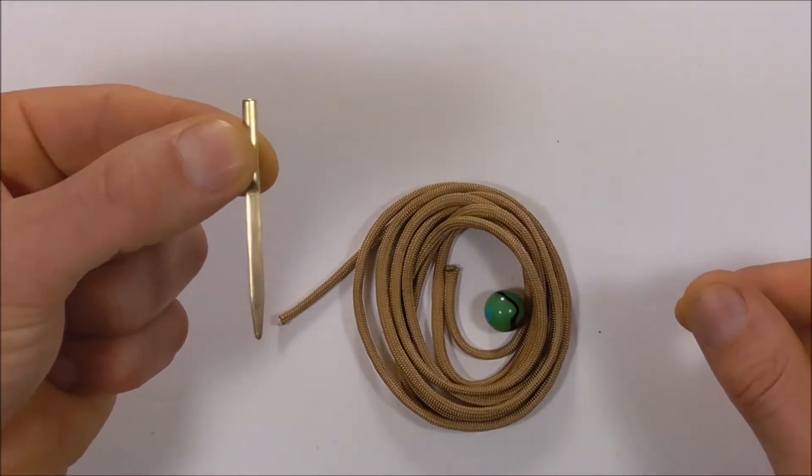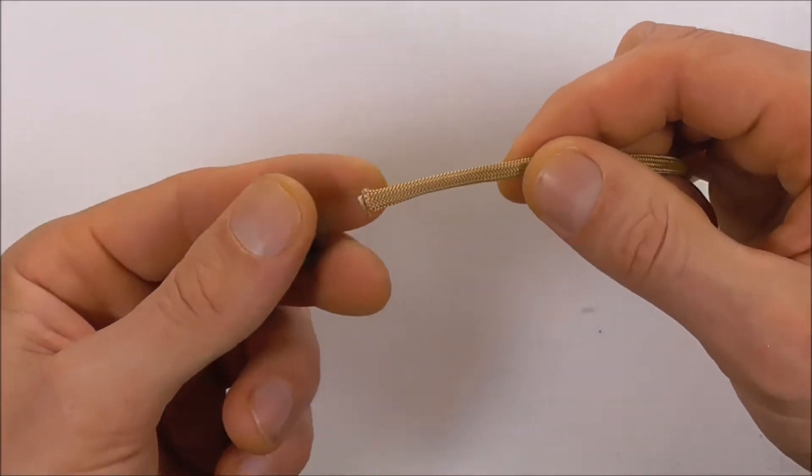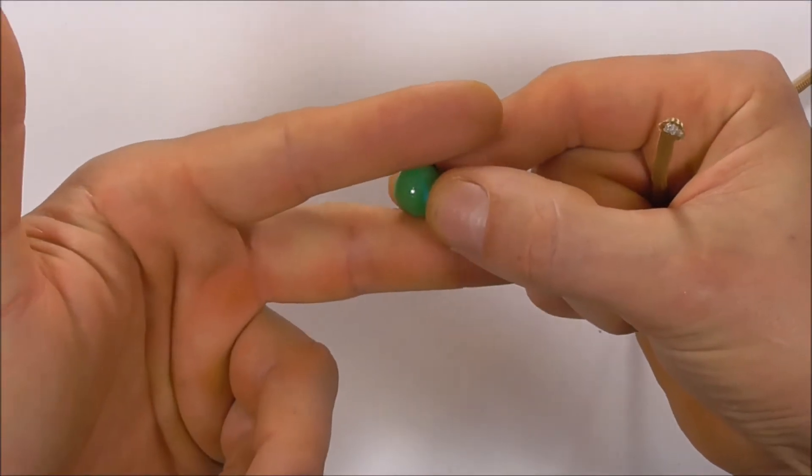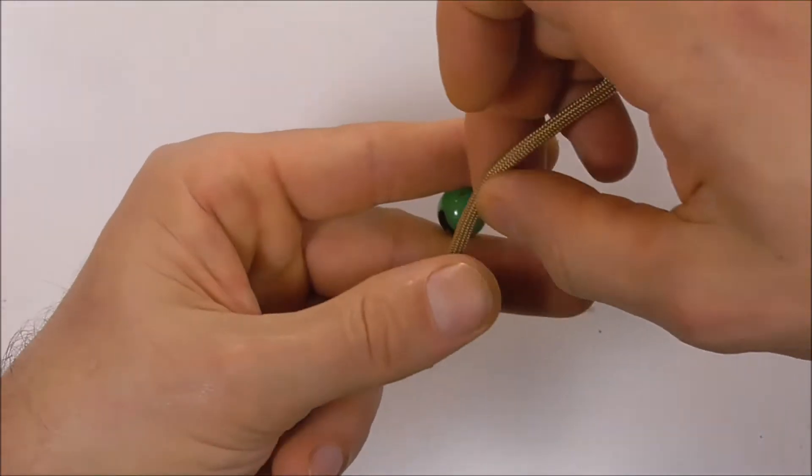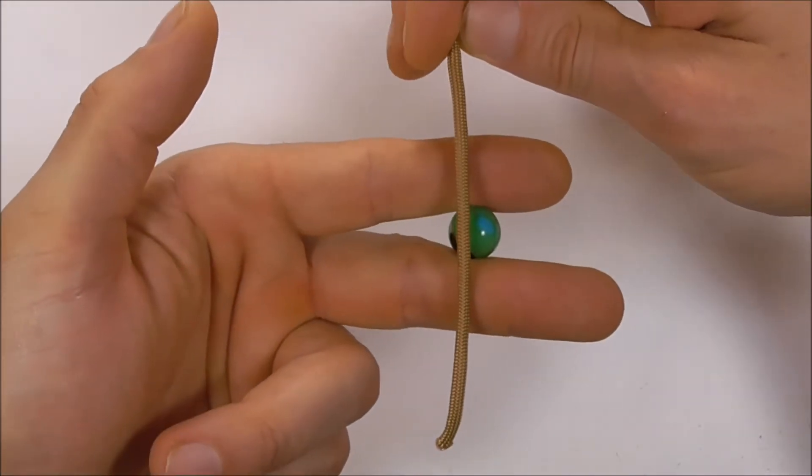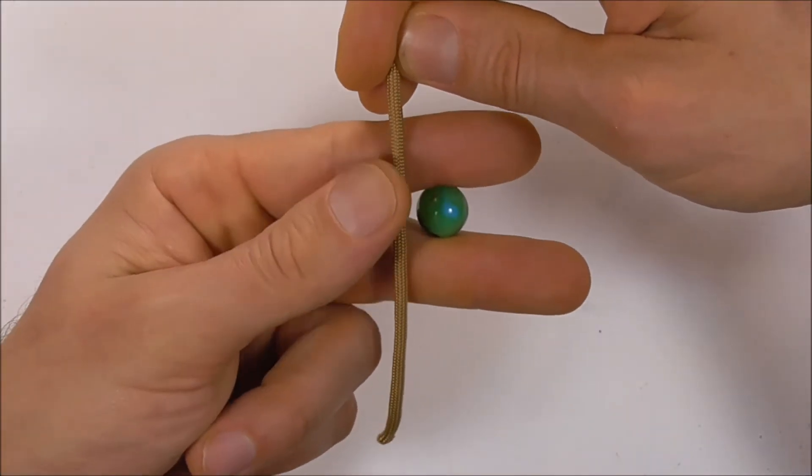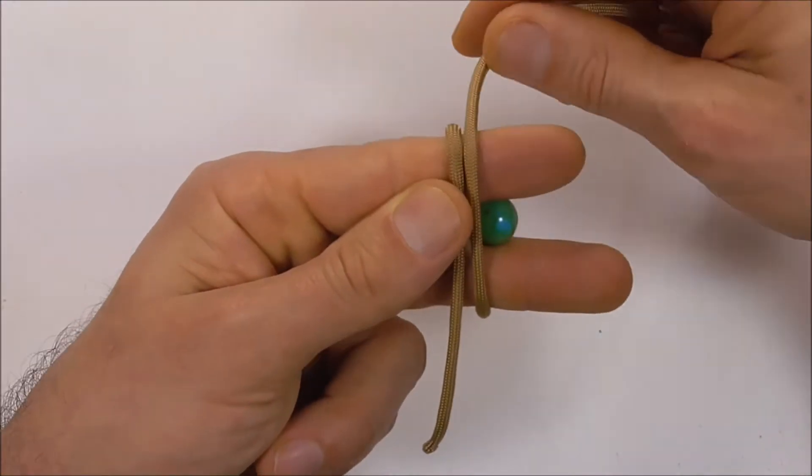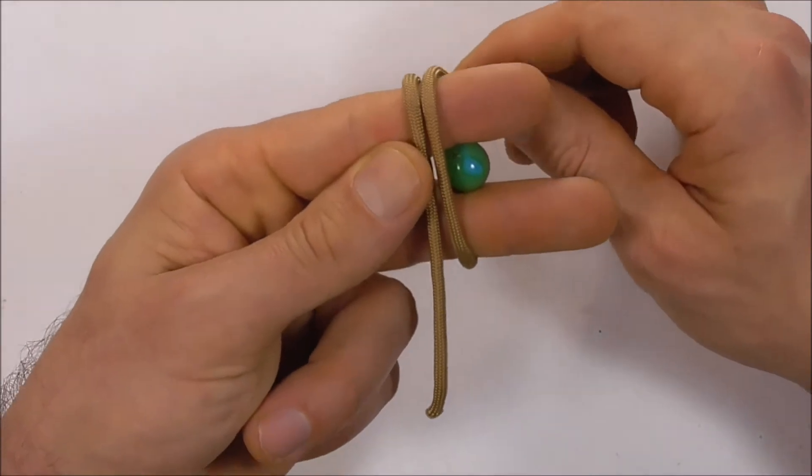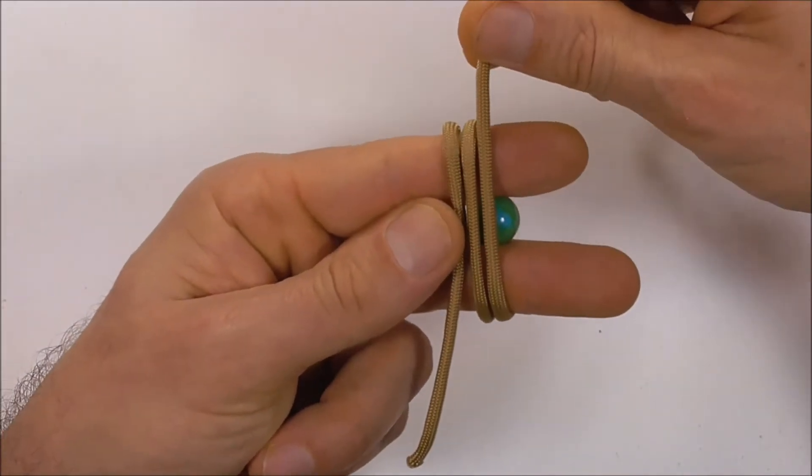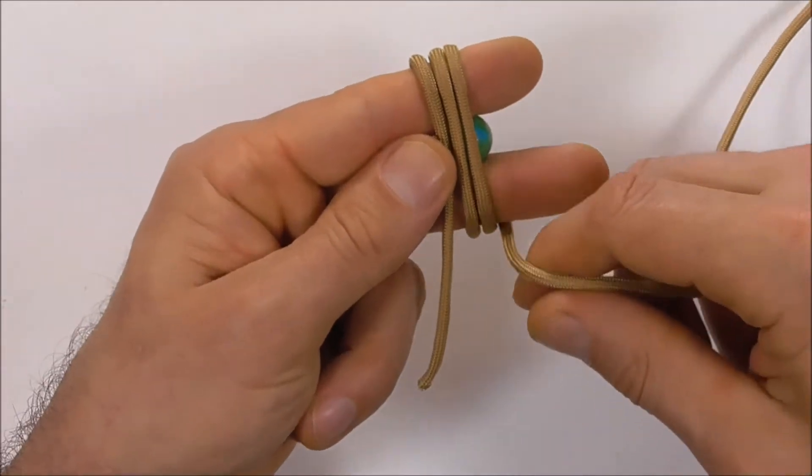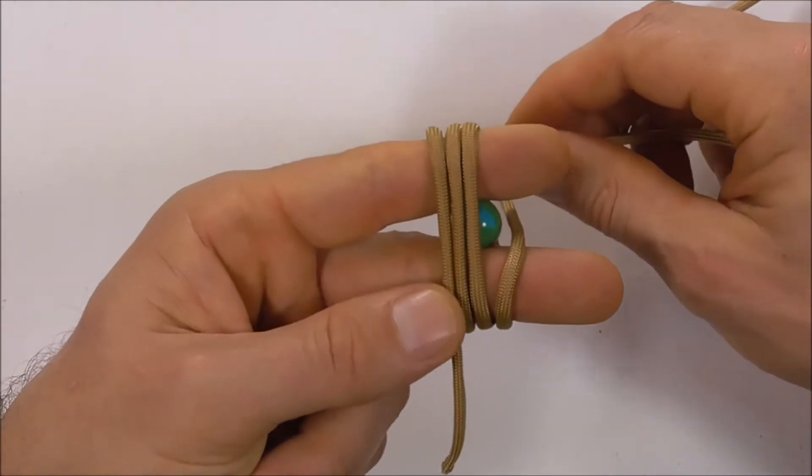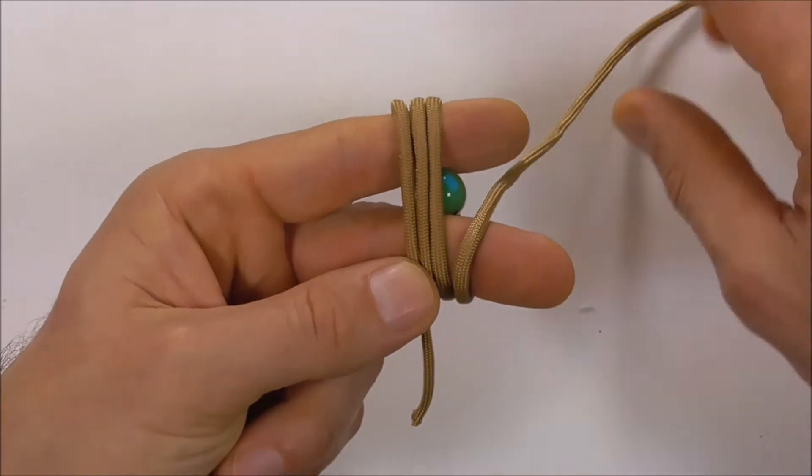We're going to start this one off by tying our monkey's fist. So just locate the end of your piece of paracord and take your marble and place it in between your fingers. Then place your paracord over your fingers, just pinch it off, and take three wraps going forwards. So that's three.